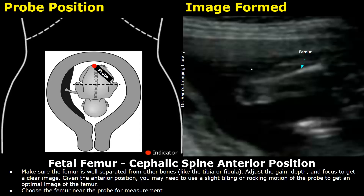Always choose the femur that is near the probe for measurement. Do not choose the femur that is seen in the far field. The near-field femur is better for measurement, whereas the femur in the far field is distorted due to attenuation from the near femur and will give inaccurate measurements.